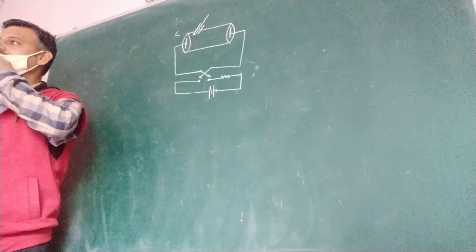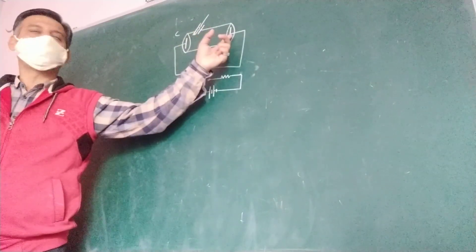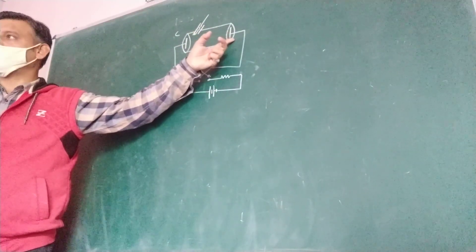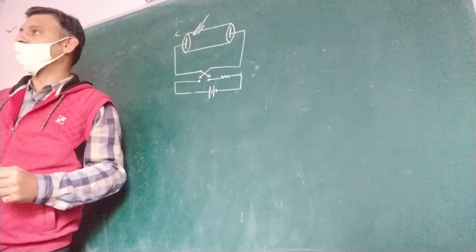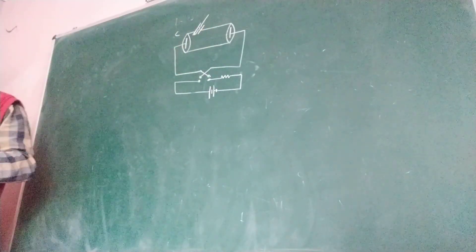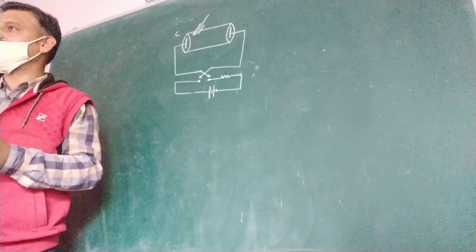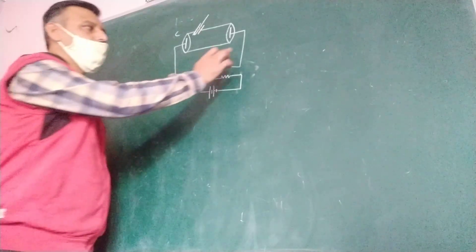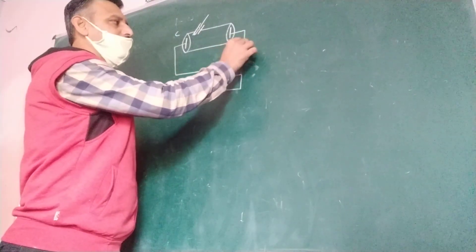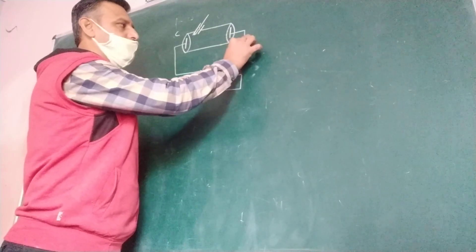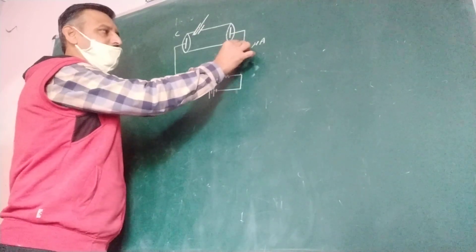Ejected electrons move towards the positive of the battery, and movement of electrons will constitute electric current, and that current is called photoelectric current.